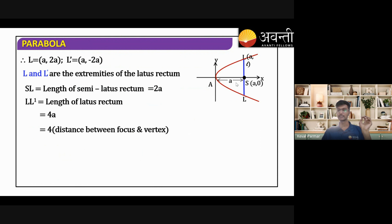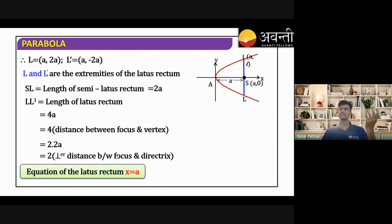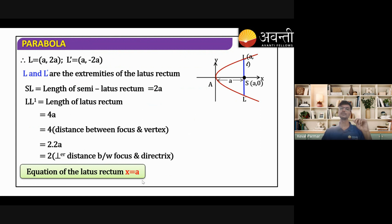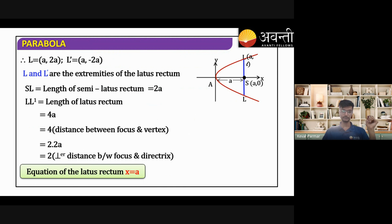The distance between focus and vertex is 2 times 2a. The equation of the latus rectum is parallel to the y-axis and passes through (a, 0), so it is x = a. Anjana, Girishan, Mamtha — are you all understanding? Give me a thumbs up or should we revise again?